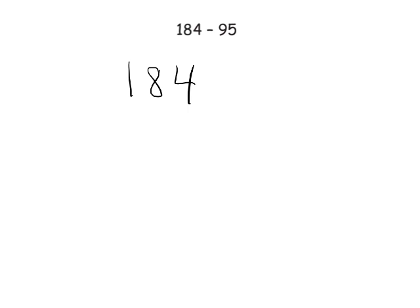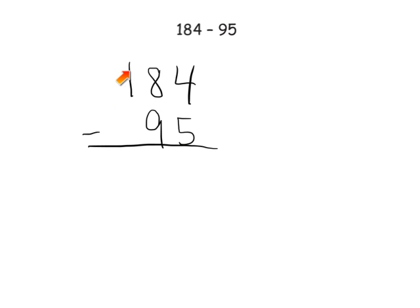All right, let's do another practice problem. We're going to write it vertically: 184 minus 95. Here's the tricky thing — you've got to make sure students are lining up the ones column and the tens column correctly. Students might shift the numbers and line up the 1 in 184 with the 9 in 95, which would mean lining up the hundreds with the tens. That's no good.